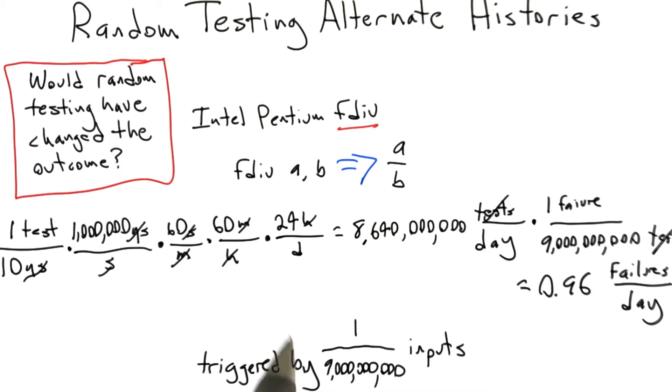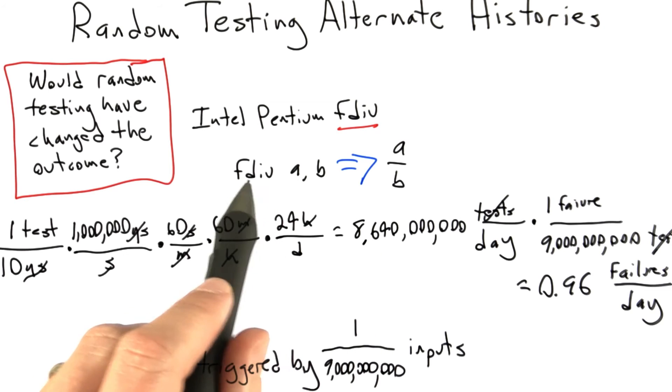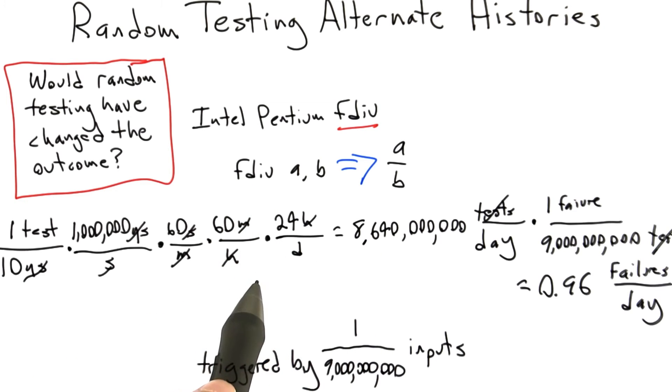And the way this is going to work is IEEE floating point, which is what fdiv is implementing, is specified very tightly. That is to say, one implementation of IEEE floating point division has to return the same bit pattern as another implementation. That's one of the nice things about that particular specification is that it's fairly tight.